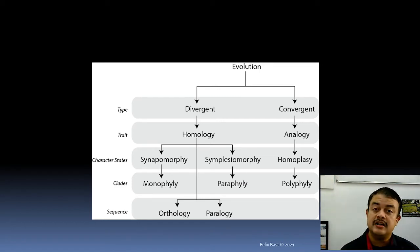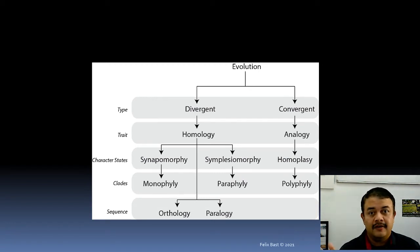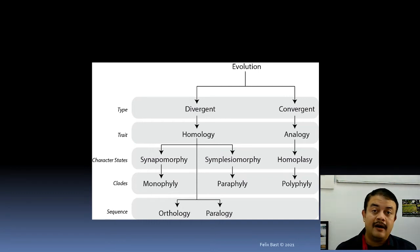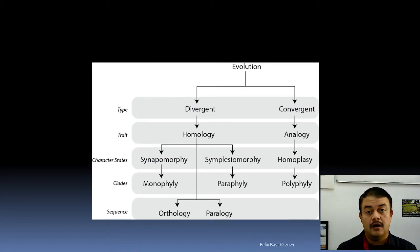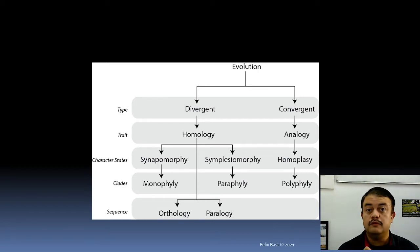Orthologous sequences are sequences separated by speciation events, while paralogous sequences are separated by gene duplication events. The alpha and beta chains of hemoglobin are a classic example of paralogous sequences. Human heme and cat heme are orthologous sequences — separated by speciation. Paralogous sequences are a stepping stone for the evolution of new genes: gene duplication occurs, the new gene acquires a new function, and that is how new genes are formed.